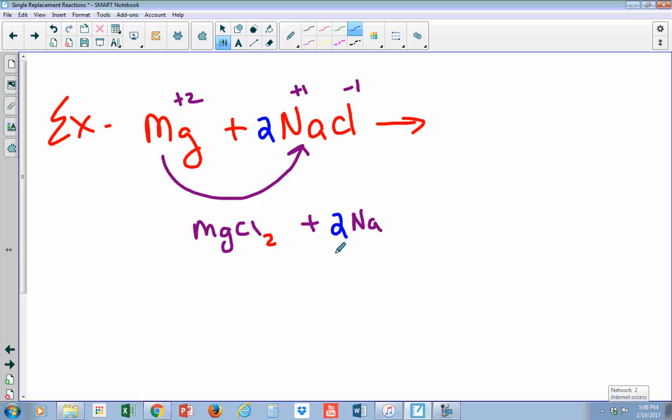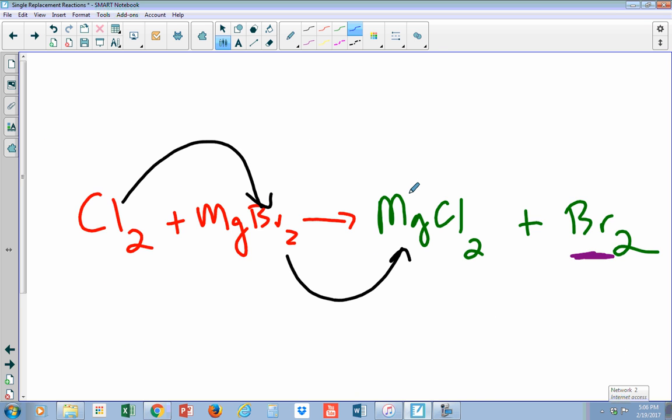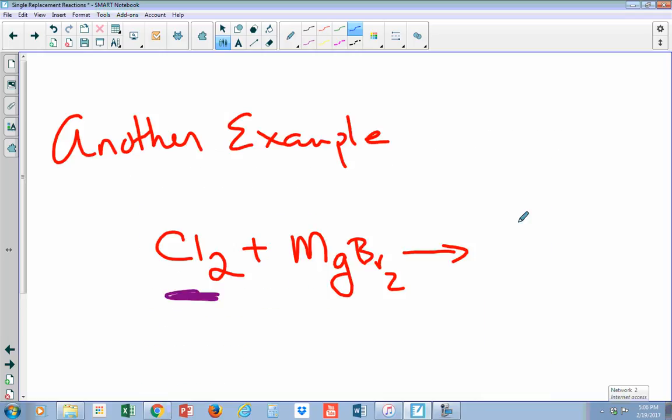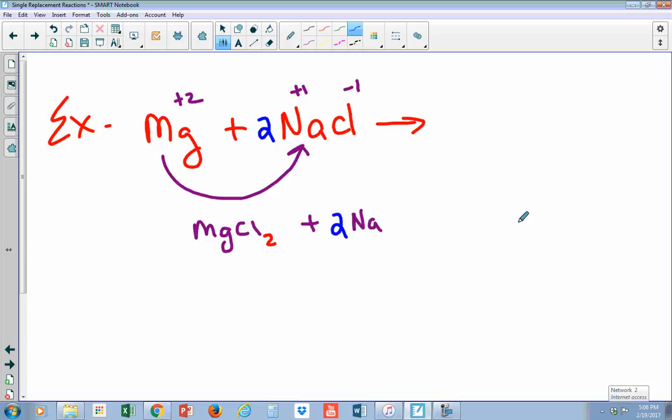And the last thing, the most important thing is, does this reaction happen? So if it happens, magnesium has to be more active than sodium. Magnesium is more active than sodium. Let's go back here and take a look. Is magnesium more active than sodium? Let's see. There's magnesium right there. Uh-oh. Sodium is above it. Sodium is actually more active than magnesium. So we would have to go back here and say no. No reaction. NR. This actually does not really happen.